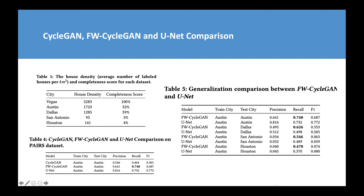Then we looked at the generalization capability between feature-weighted CycleGAN and U-Net. Clearly, we showed that the feature-weighted CycleGAN generalized much better from one city to another.